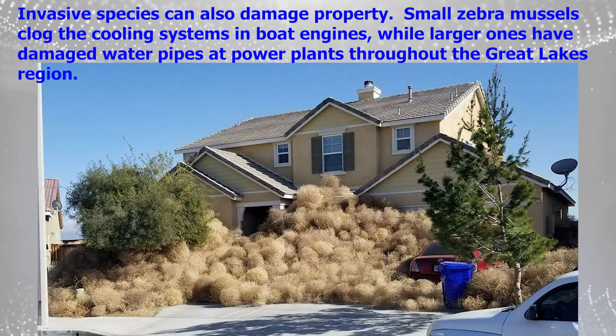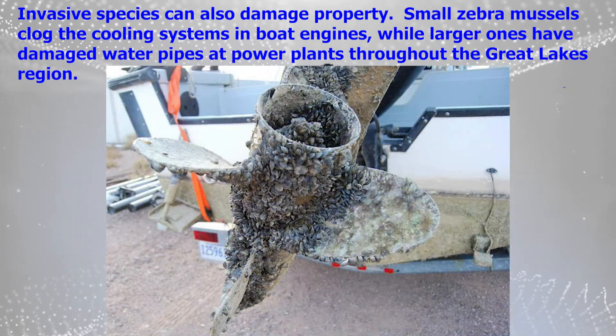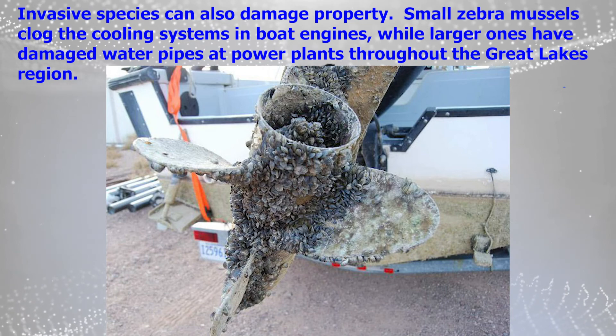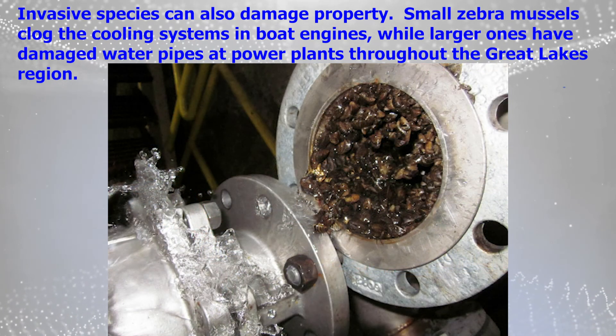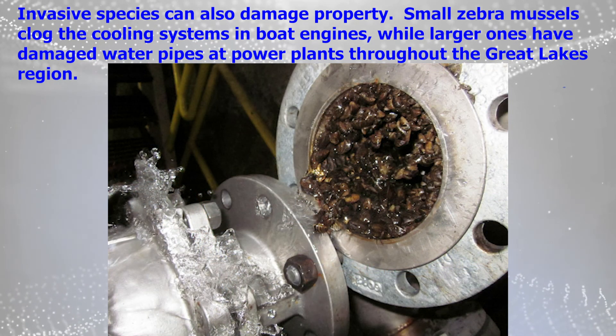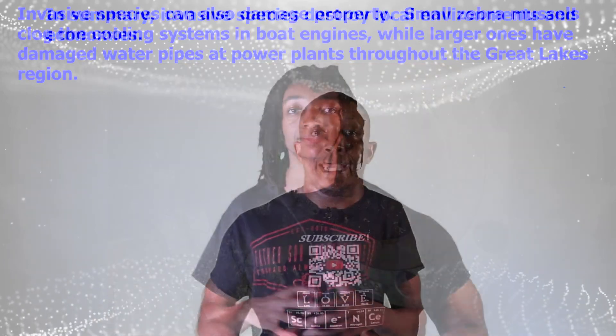Invasive species can also damage property. Small zebra mussels clogged the cooling systems and boat engines, while larger ones have damaged water pipes and power plants throughout the Great Lakes region.